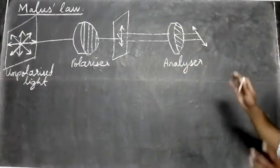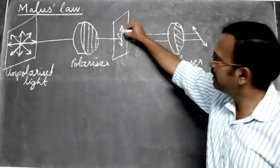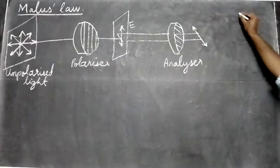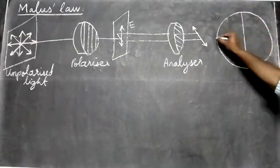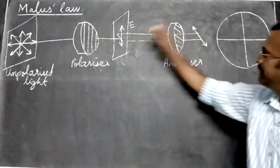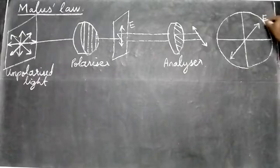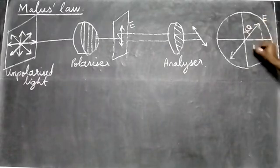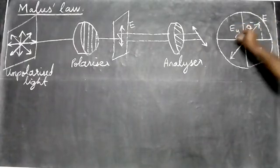Now we must compare the electric fields. The electric field E is vibrating here. I'll draw a circle divided into four quadrants. The electric field E is at some angle theta to the vertical. The horizontal component is Ex and the vertical component is Ey.